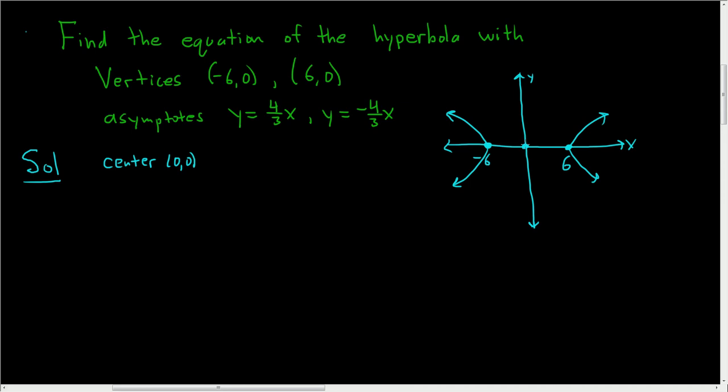The distance from the center to one of the vertices is a. So in this case a is equal to 6, so a is 6.